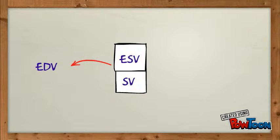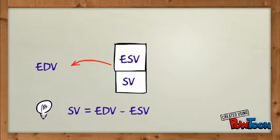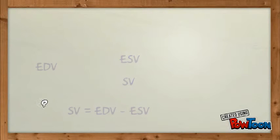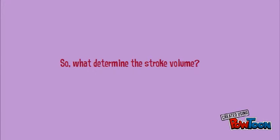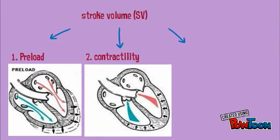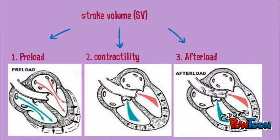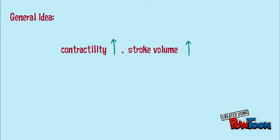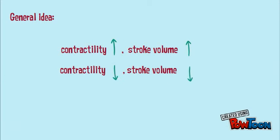So, stroke volume is equal to EDV minus ESV. The three factors that determine stroke volume are preload, contractility, and afterload. As a result, contractility is directly proportional to stroke volume.